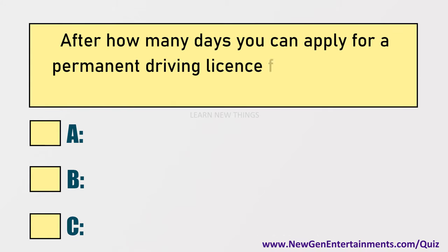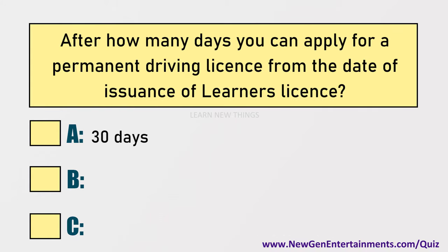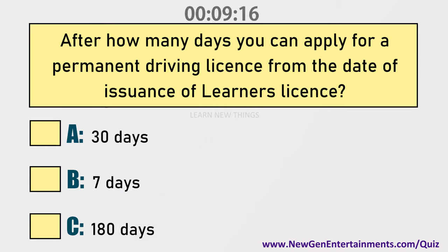After how many days can you apply for a permanent driving license from the date of issuance of the learner's license? Options are: A) 30 days, B) 7 days, C) 180 days. Answer: Option A, 30 days.